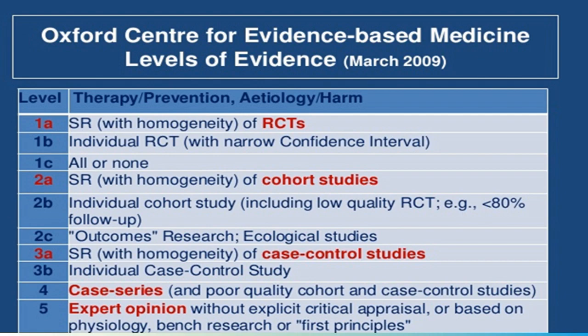If you see this classification given by the Oxford Centre of Evidence-Based Medicine in 2009, they have given numerical values — that is, the levels. 1A represents systematic reviews done using RCTs with homogeneity, meaning the systematic review has taken into account only RCTs. If it is heterogeneous, the systematic review has taken into account RCTs, cohort studies, and some other studies. 1B is an individual RCT with a narrow confidence interval, meaning it has been done with high validity. 1C is also a systematic review category.